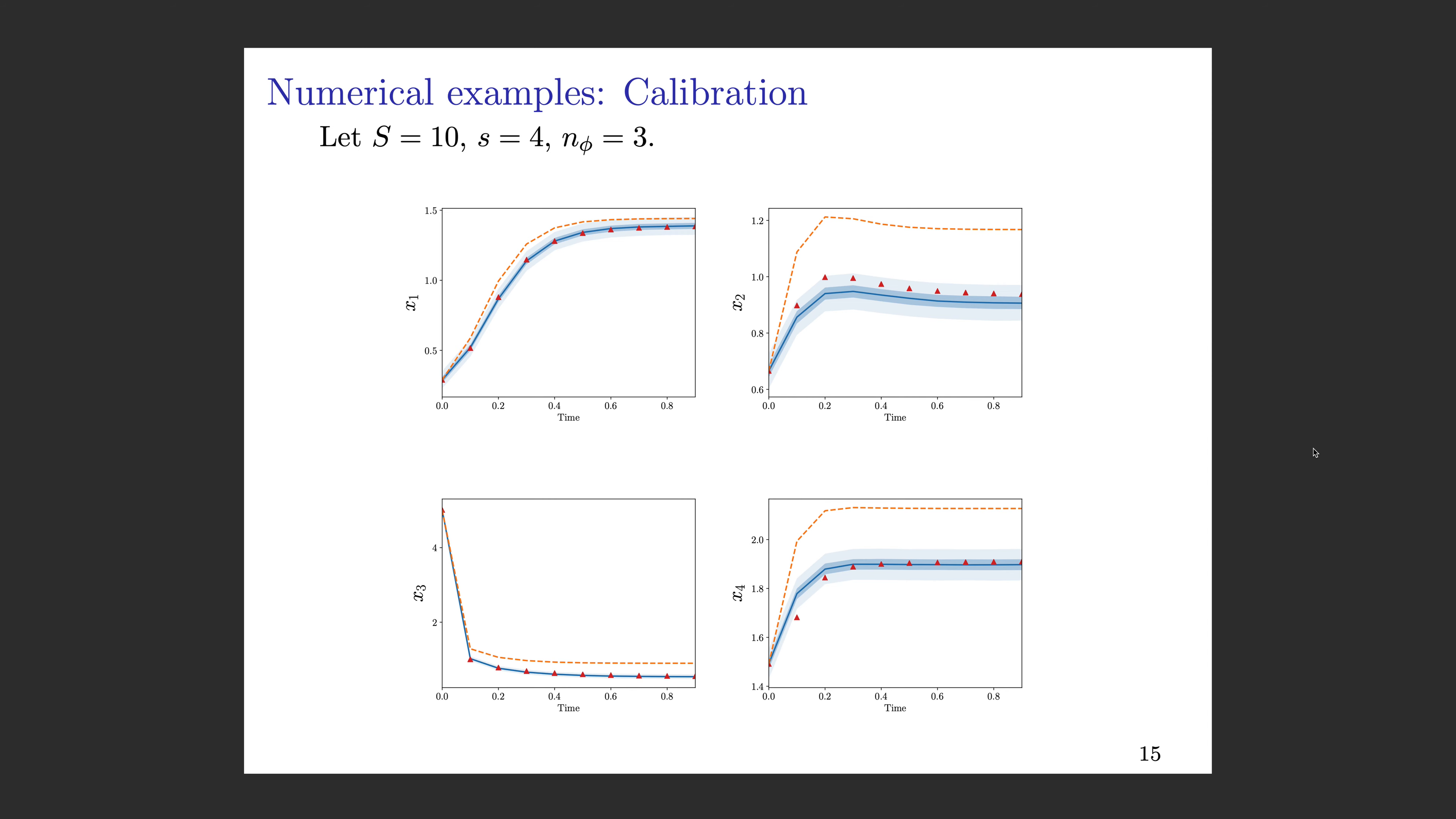Let's see some numerical examples. This is just some numerical examples when our detailed model is that we have 10 species, we reduce down to four, and we have three initial conditions. We take data, shown in the red triangles. We start with the reduced model, which is the orange dotted line, and then we calibrate this embedded operator and recover the dynamics that are in the blue curves, showing the median response and the 50% and 95% confidence intervals. This is fairly typical of results you'll see for calibration.